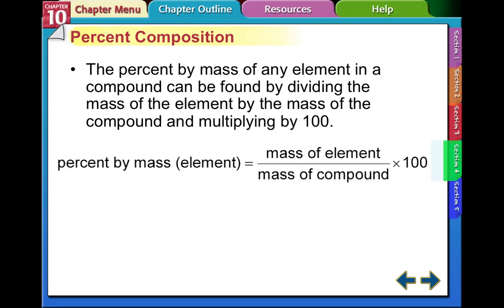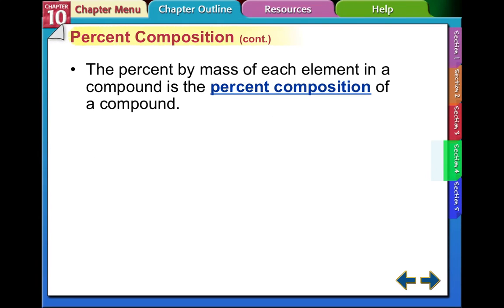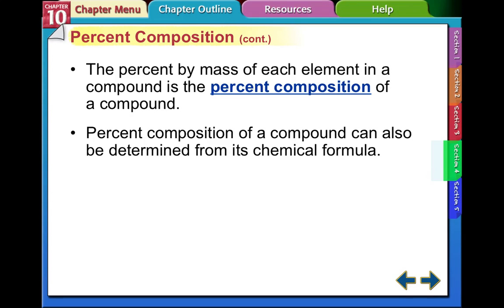We're going to start with percent composition. The percent by mass of any element in a compound can be found by dividing the mass of the element by the mass of the total compound and multiplying by 100. So if you had 8 questions out of 10 correct on a quiz, you would have 80% — it's very similar to how you calculate percent composition. The percent by mass of each element in a compound is the percent composition of that compound, and it can also be determined from its chemical formula.